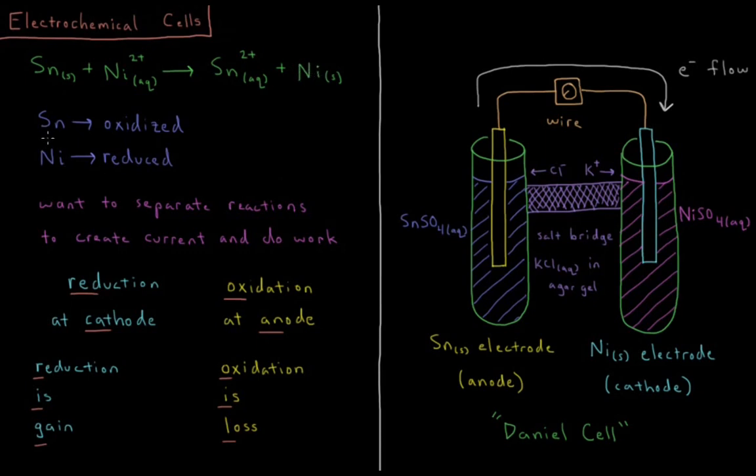So what we'd say during this reaction is the tin goes from having a charge of 0 to plus 2. It loses 2 electrons during this reaction, so that's what we would call oxidation. The tin atoms are oxidized, and the nickel ions, nickel cations start at an oxidation state of plus 2, they gain 2 electrons, and they end up as neutral metal atoms, so the nickel ions are said to be reduced, or they undergo reduction during this reaction.